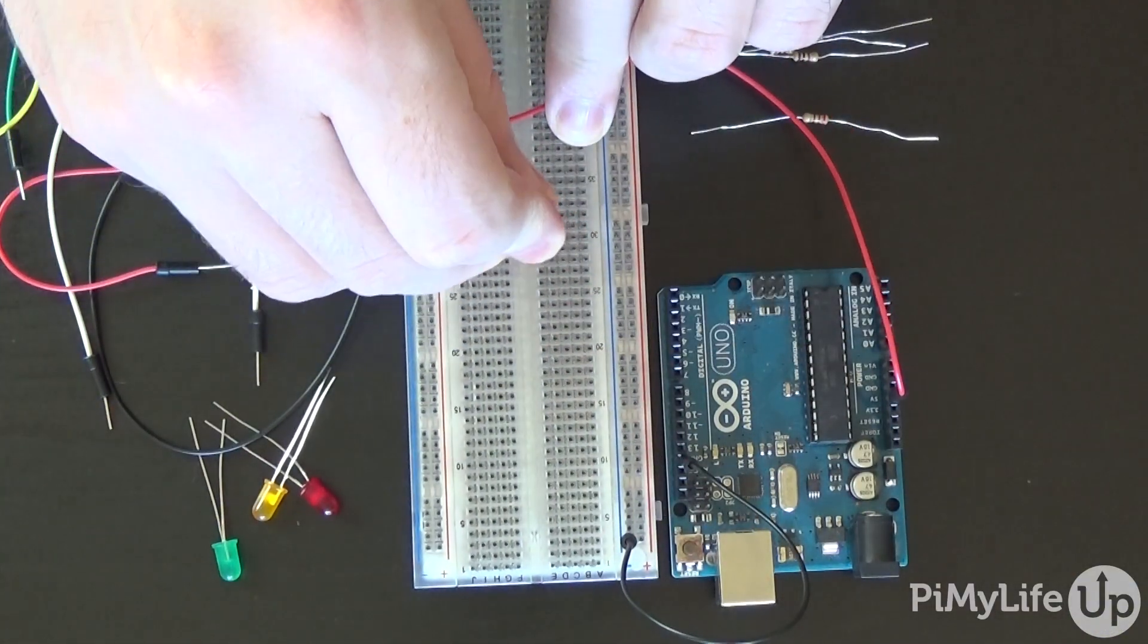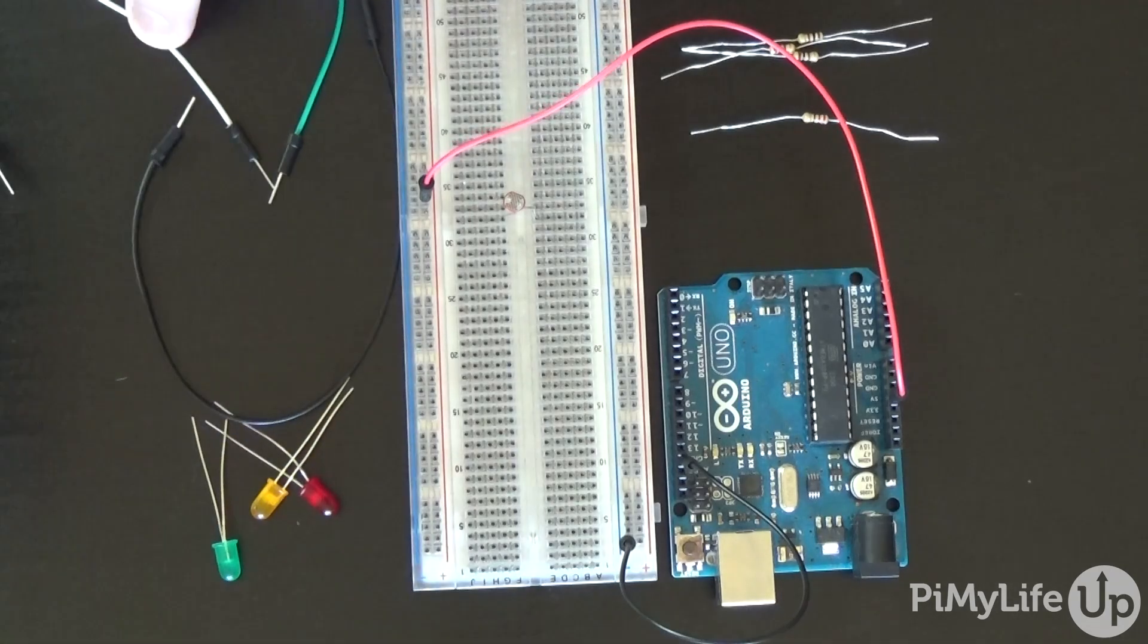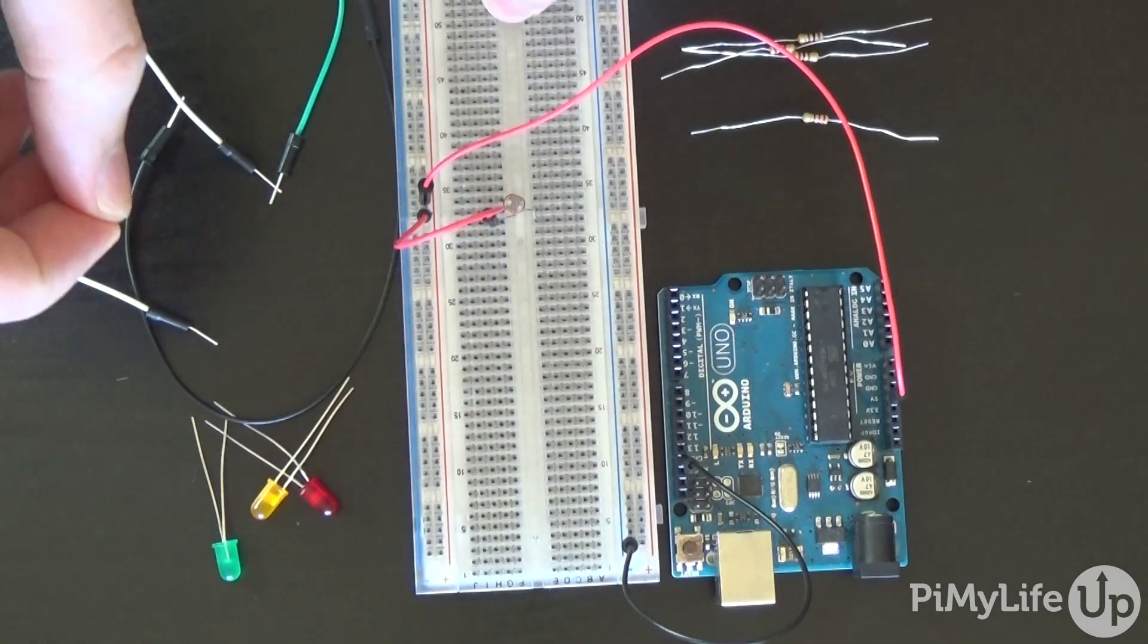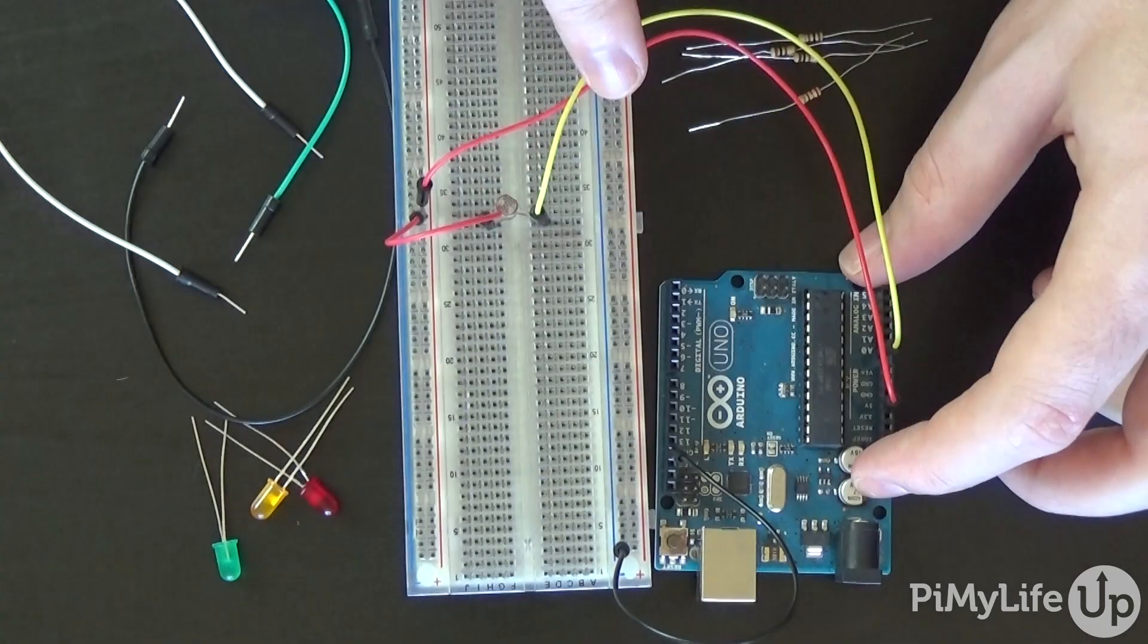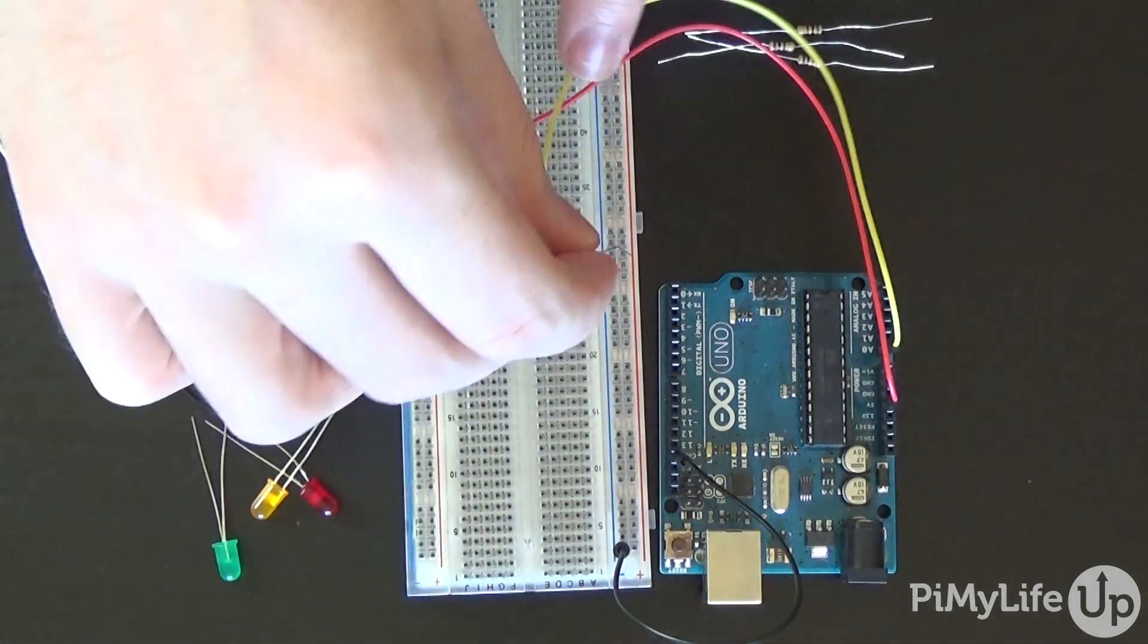Next, place the photo resistor onto the breadboard. Hook a wire from one end to the positive rail. On the other end, have a wire go back to A0 on the Arduino. Finally, on the other side of the wire, add a 220 ohm resistor that goes to the ground rail.